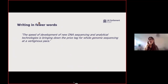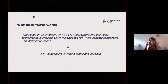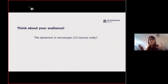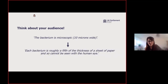Here's an example of saying something with fewer words. This very long sentence about 'the speed of development of new DNA sequencing analytical technologies bringing the price tag of genome sequencing to a new level' is impossible to read. How do we make it clearer? Simply: 'DNA sequencing is getting faster and cheaper.' Another tip: think about your audience. You can't say 'the bacterium is 10 microns wide' because most parliamentarians don't know what a micron is. Instead say: 'each bacterium is roughly a fifth of the thickness of a sheet of paper — some cannot be seen by the human eye.' Easy to understand for a parliamentarian.